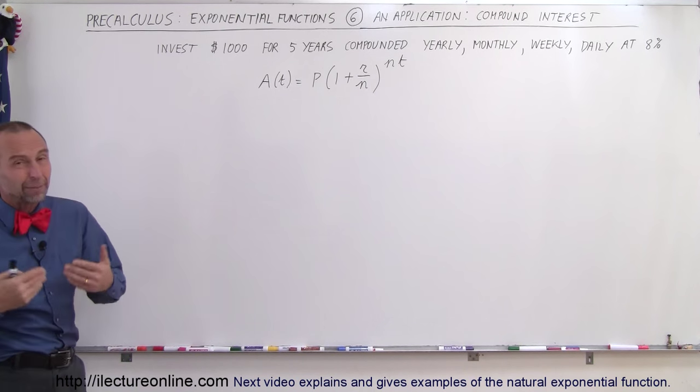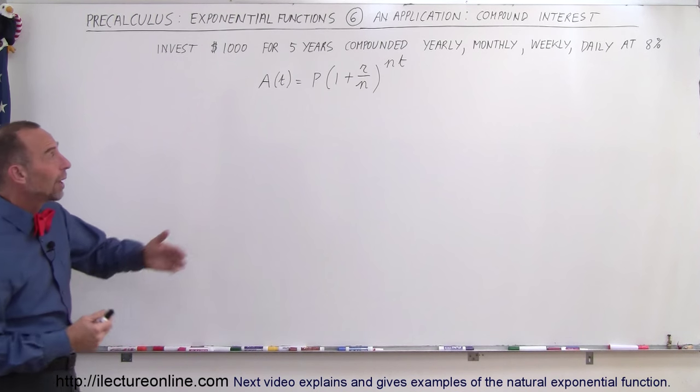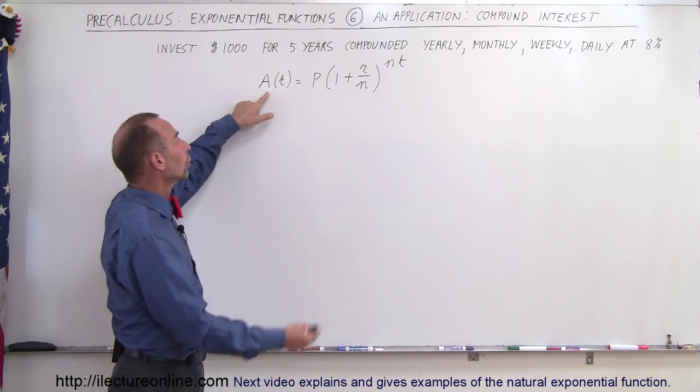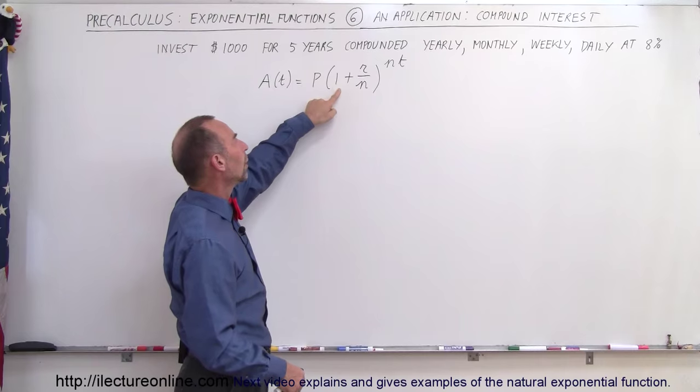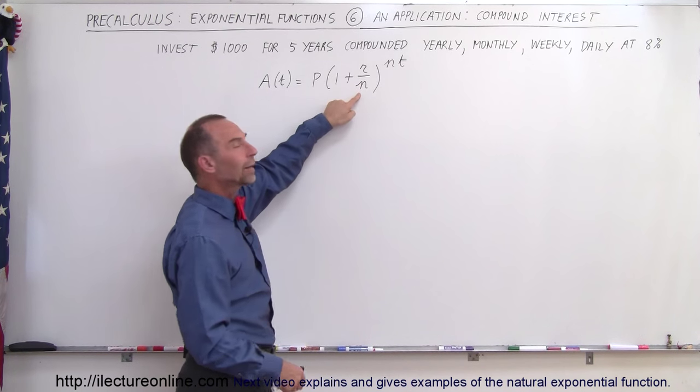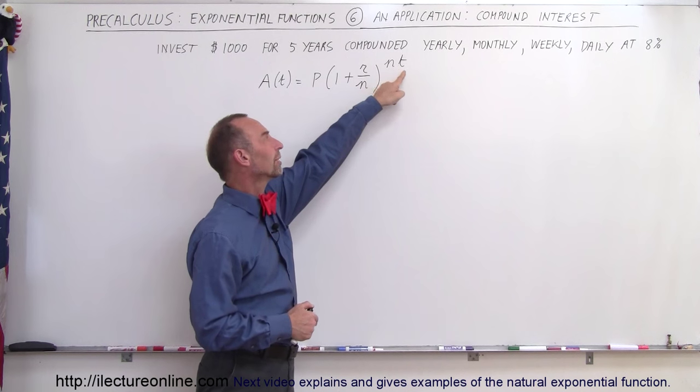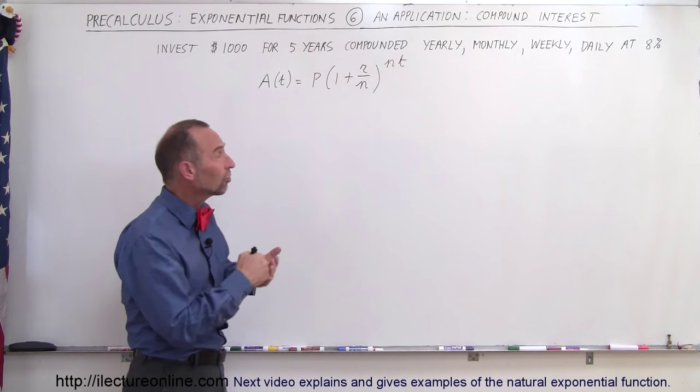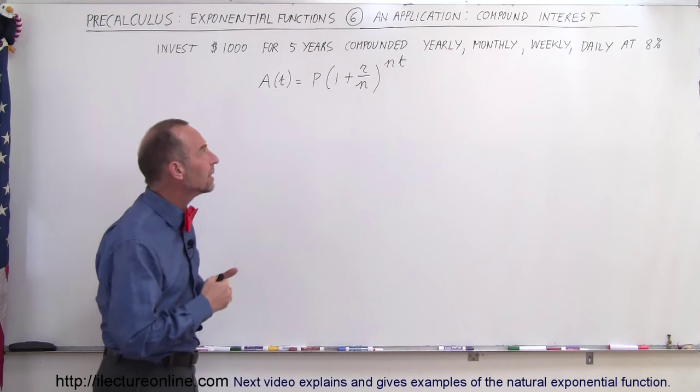So the first example, the first application, is going to be compound interest. Here we have an equation that says the amount that will accumulate is equal to the principal invested times the quantity 1 plus the rate divided by the number of conversions per year, raised to the number of conversions per year times t. Now n is a constant, r is a constant, and t is the variable, the independent variable time in years.